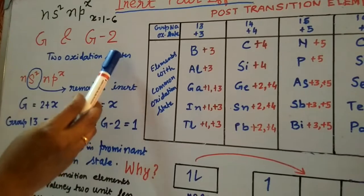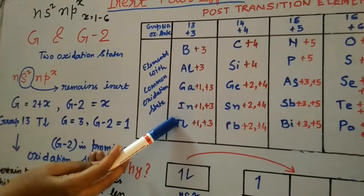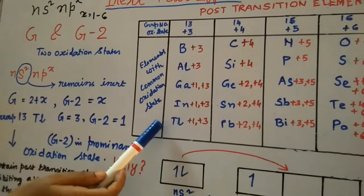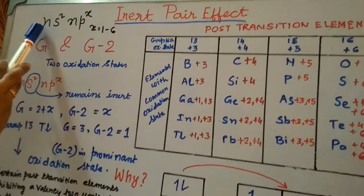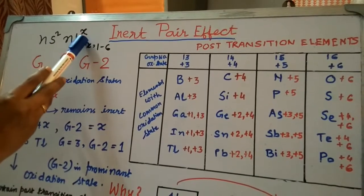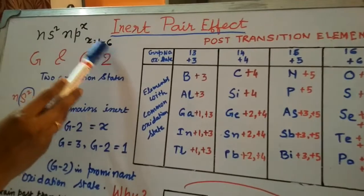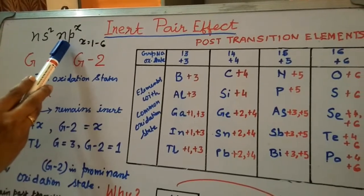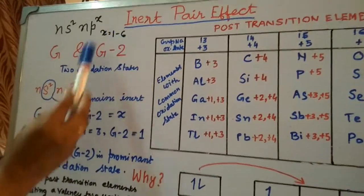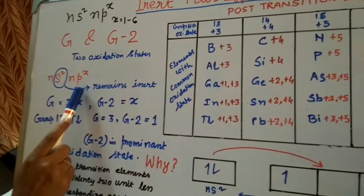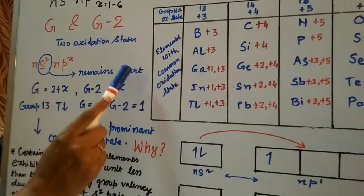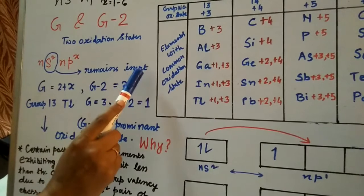These two oxidation states are shown by the heavier elements. Why is it called the inert pair effect? We need to know the general electronic configuration of these elements, which is ns²npˣ where x equals 1 to 6. In this configuration, if the s² pair remains inert for the formation of bonds, that is called the inert pair effect.